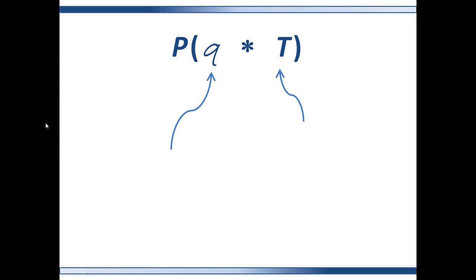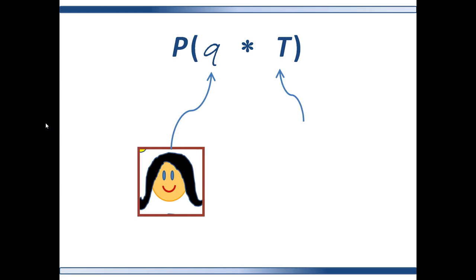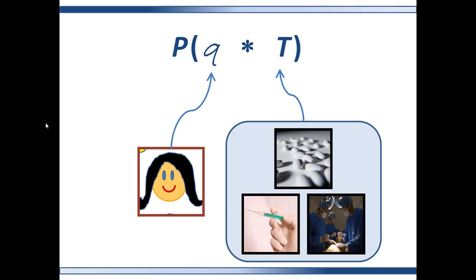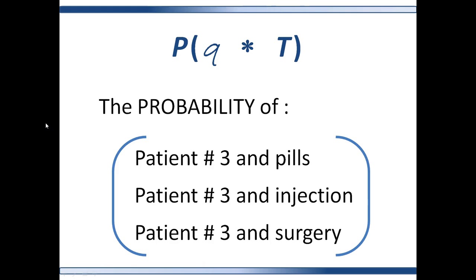What is inside the parentheses? The event Q comes from the sigma algebra on S — the outcome set with patients. So Q could be any event such as a patient or subset of patients, crossed with the entire outcome set T, which is all the treatments. This probability comes from the measure on the complex measurable space, not from either individual measure space. Using our example, it could be the probability of patient number three and pills, patient number three and injection, or patient number three and surgery. So the marginal probability is simply asking: what is the probability of getting patient number three?